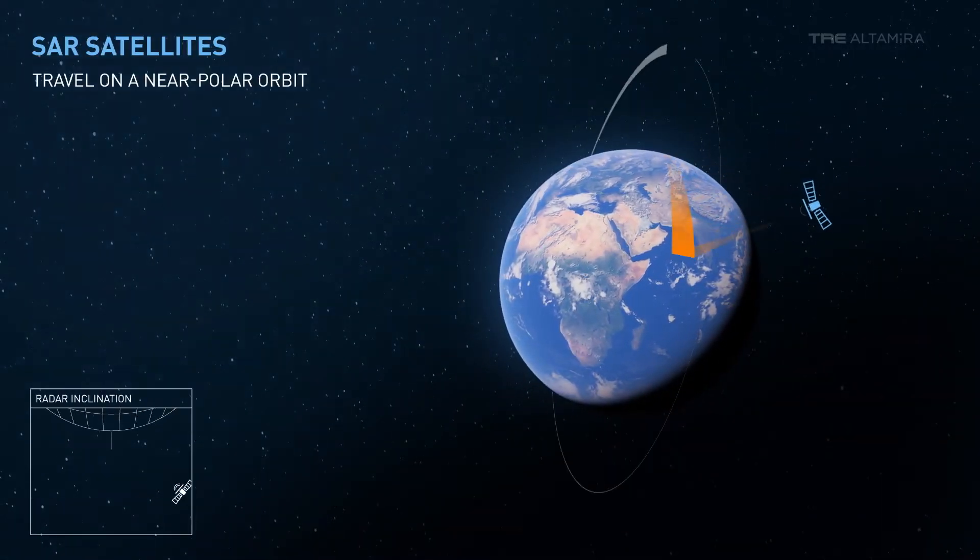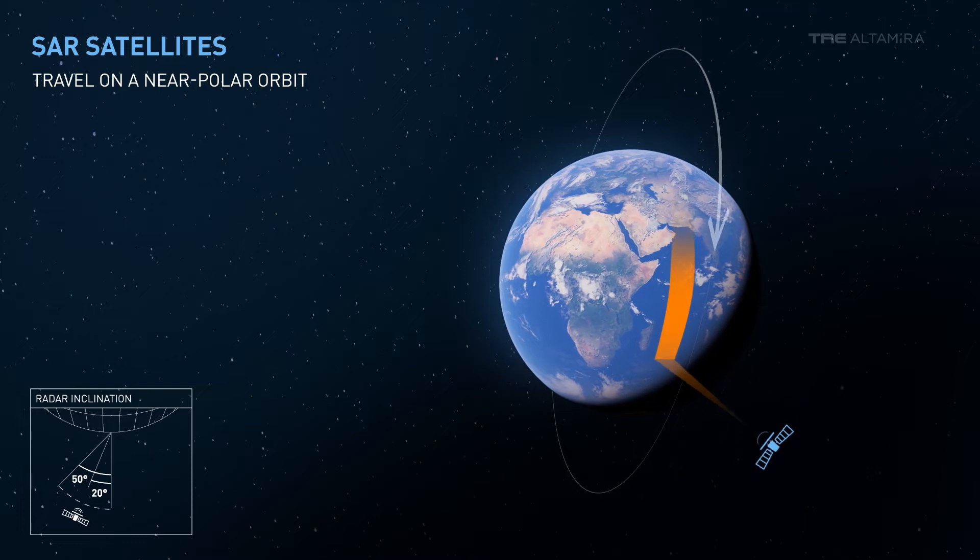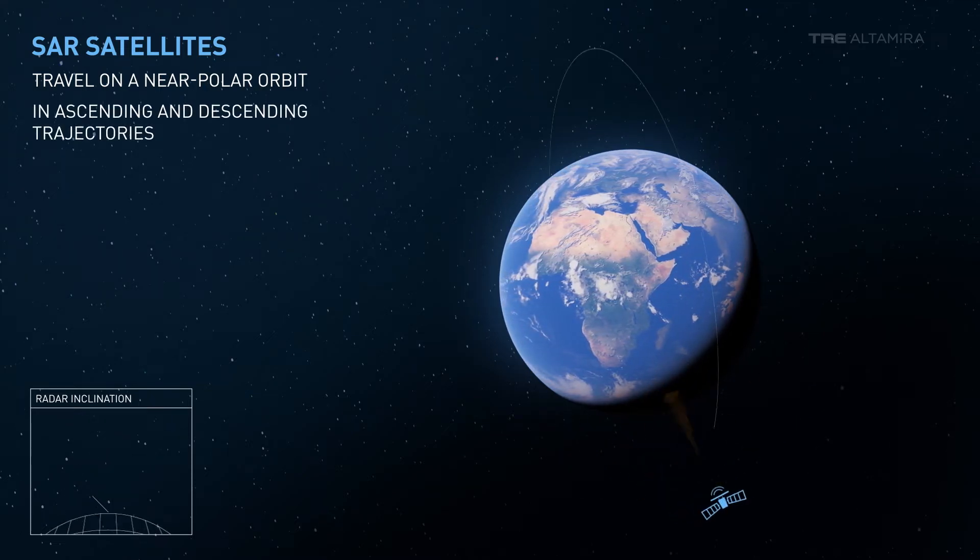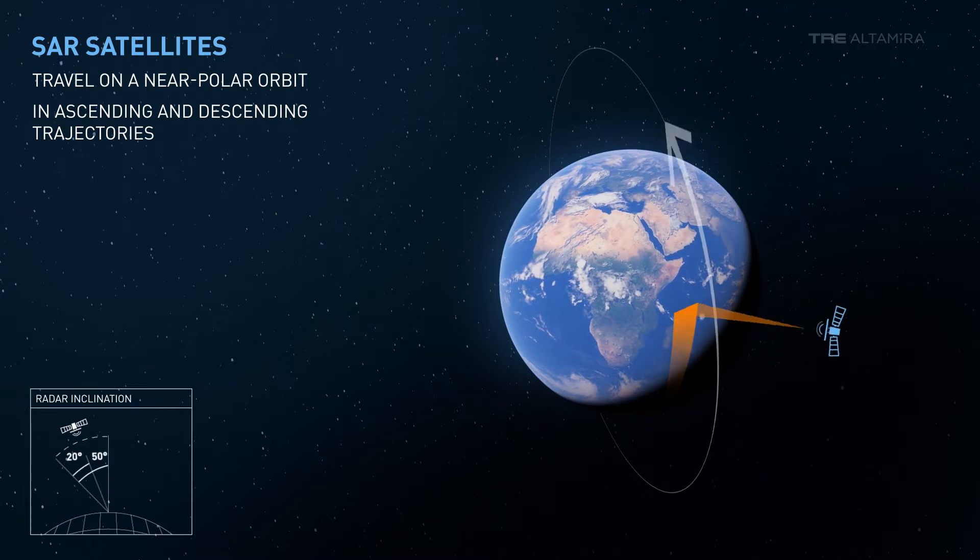SAR satellites travel on a near-polar orbit, from north to south in a descending orbit, and from south to north in an ascending orbit.